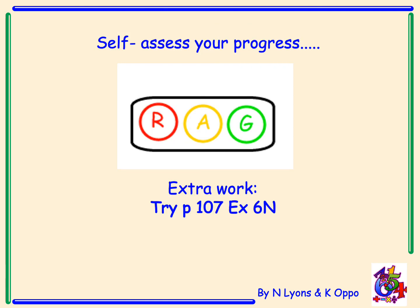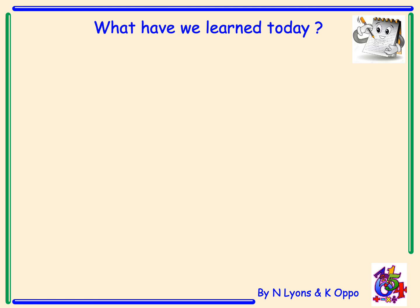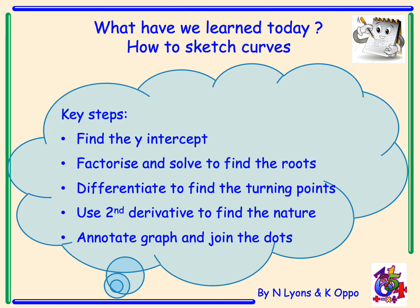Self-assess your progress — how did you get on today? Red, amber, or green? For extra work you can find exercises on page 107, exercise 6N. What have we learned today? We've learned how to sketch curves. Key steps: find the y-intercept; factorise and solve to find the roots; differentiate to find the turning points; use the second derivative to find the nature of the turning points. Remember you must annotate the graph fully and join the dots. Thank you.